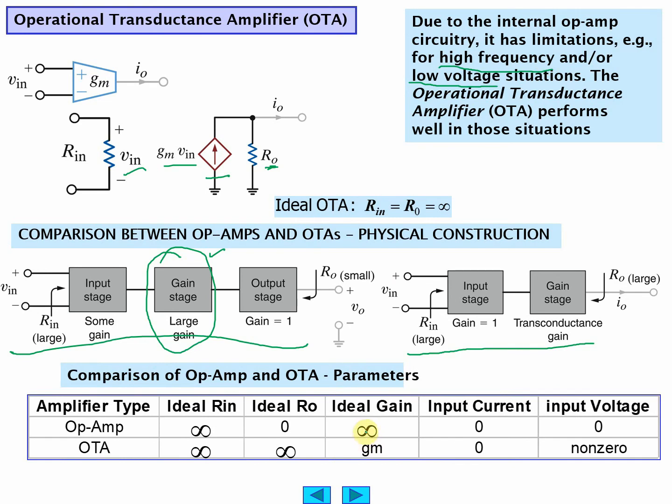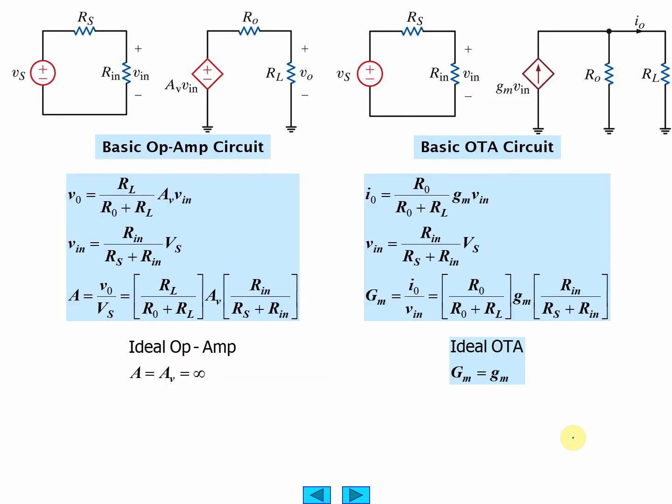Gain, here's the big difference. Gain ideally for an op amp is infinity. This is the transconductance differences. So this is the model for an op amp, voltage in voltage out. Model for transconductance amplifier, voltage in current out.